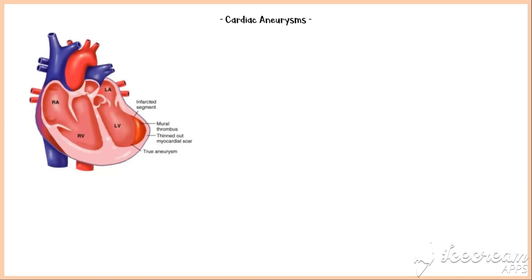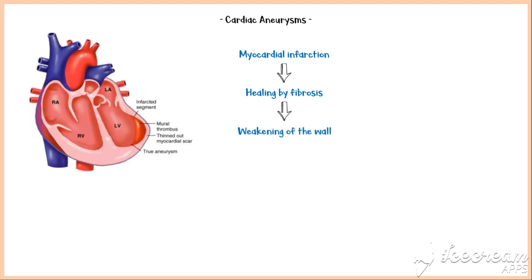Cardiac aneurysms are most commonly seen in the ventricles of the heart. The most common cause is myocardial infarction, because when an area of the myocardium is infarcted, it can no longer contract, and ultimately it heals by fibrosis. As mentioned throughout this video, fibrosis causes weakening of the affected tissue — in this case the myocardium — and this weakening predisposes to the formation of aneurysms.